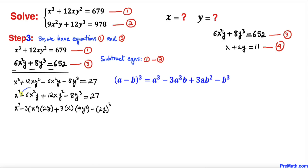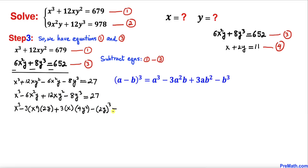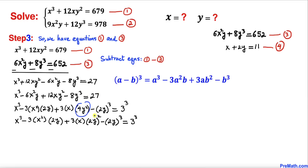Now we break down the terms: −6x²y stays as is, 12xy² is broken down similarly, and −8y³ can be written as −(2y)³. On the right-hand side, 27 = 3³. Also, 12xy² can be expressed using (2y)², so the left-hand side matches the (a − b)³ expansion with a = x and b = 2y, giving (x − 2y)³ = 3³.